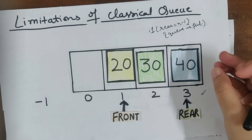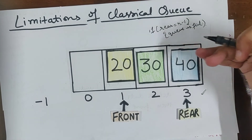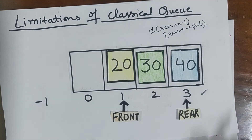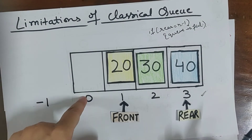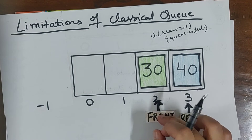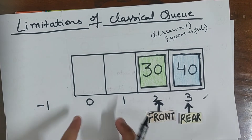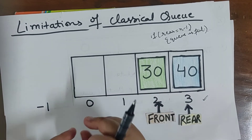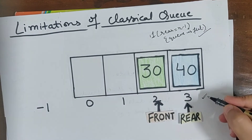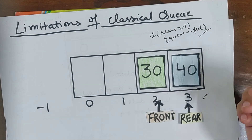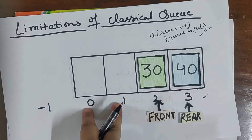My rear is at n minus 1, pointing to 3. I won't be able to insert data because I insert from the rear side and rear is already at its maximum position. Still there is space, but I still won't be able to insert data. Now let's say I delete 20 — front will become 2. Again there are two element spaces free, but I won't be able to insert new data.